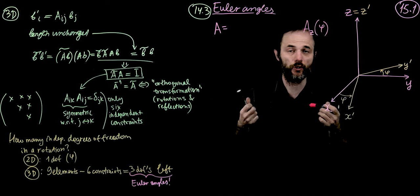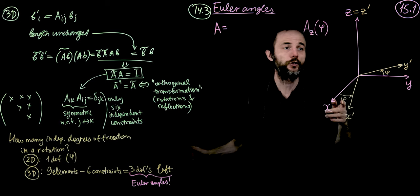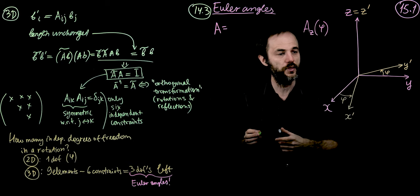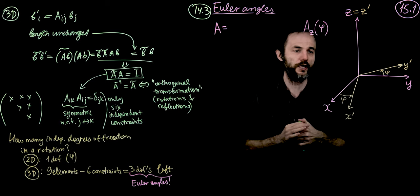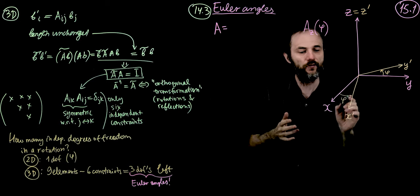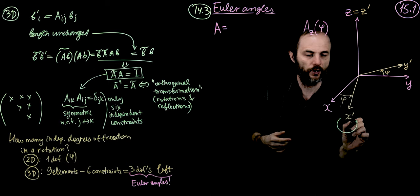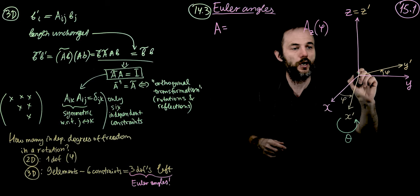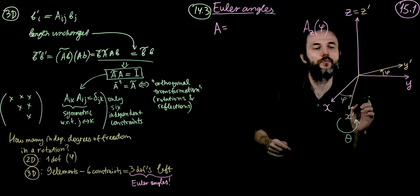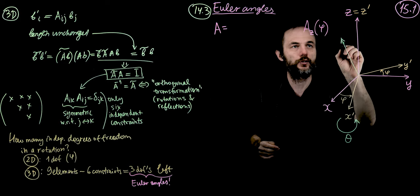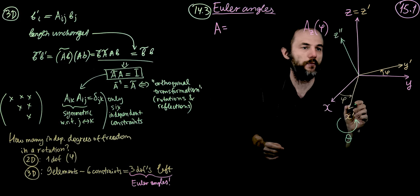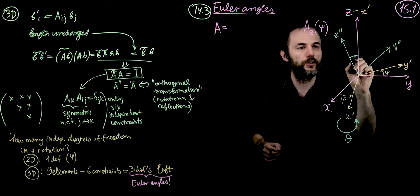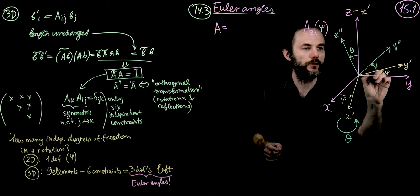There will be two more rotations to complete the full three-dimensional rotation. The next step is to rotate everything about the x-prime axis by an angle theta. This rotates in the y-prime, z-prime plane. We get a new z-double-prime and new y-double-prime, with angle theta between them, while x-prime stays equal to x-double-prime.